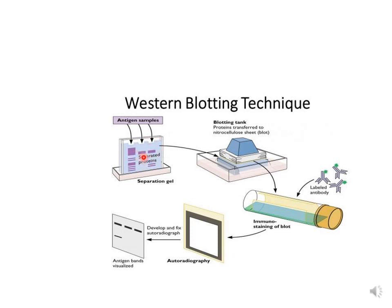Another technique shown is Western blotting via capillary action, where the gel is set up and capillary action transfers proteins from gel to PVDF or nitrocellulose membrane. The membrane is then treated with primary antibody and secondary antibody, and if a radiolabeled antibody is used, an autoradiogram is developed to visualize the bands. This is how the Western blotting technique takes place.